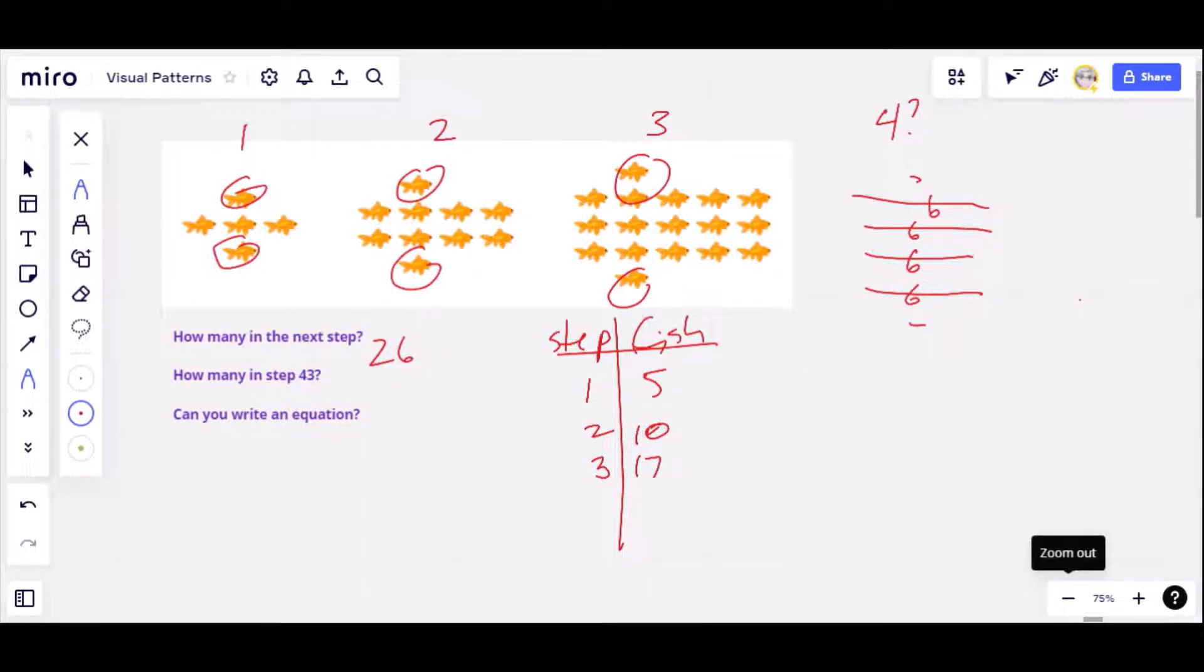And in step four, we're saying 26. When we list out our numbers for each step, then we like to take the differences. So I'm going to subtract 10 minus 5 is 5. 17 minus 10 is 7. 26 minus 17 is 9. And when we don't get the same number, we don't get a constant for the differences, it means it's not a linear pattern.